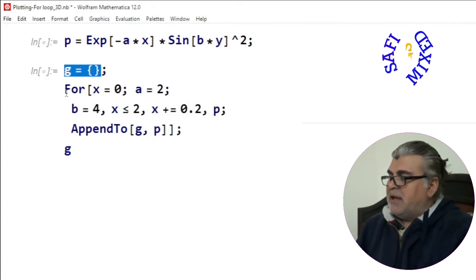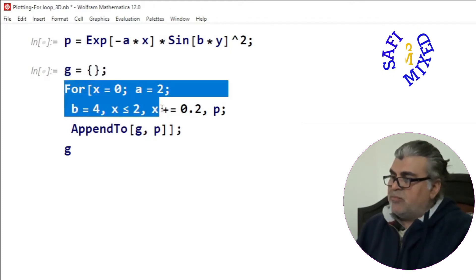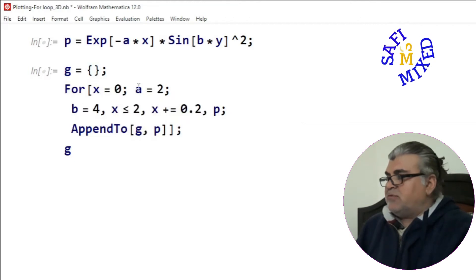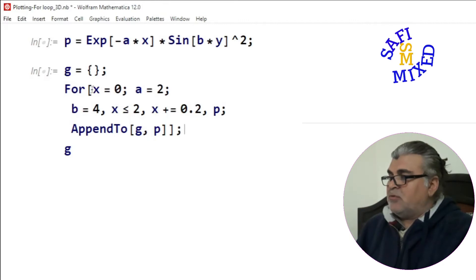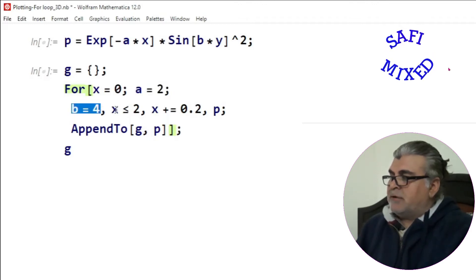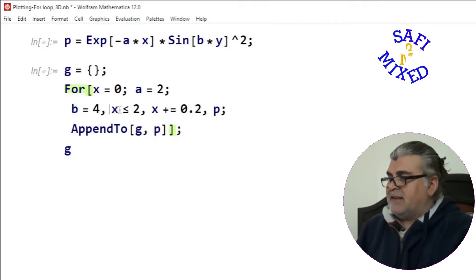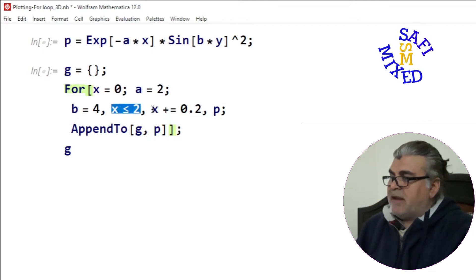And then I generate a for loop over here, and I would like to explain this a little bit. So here I assign the value of variable x starting from 0, and I set a equal to 2, b equal to 4. Then I put the condition such that x is either less than or equal to 2, and the next condition is that it is varying in steps of 0.2.